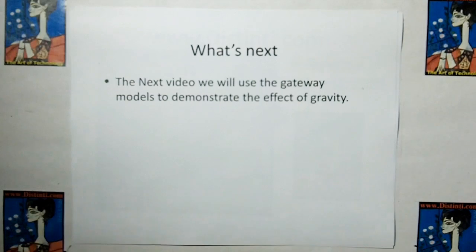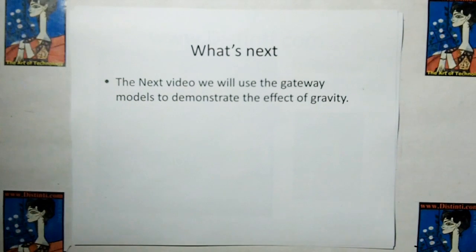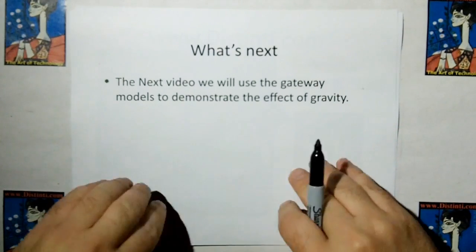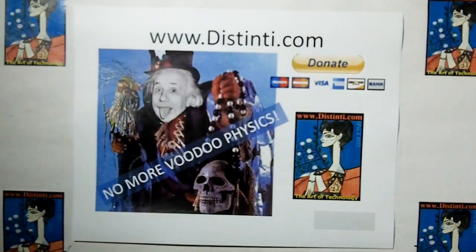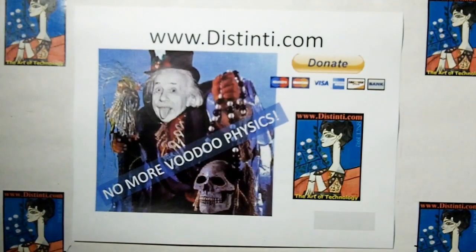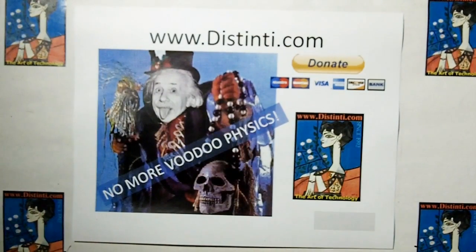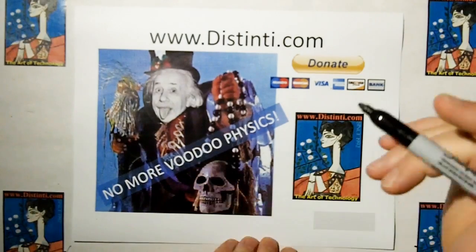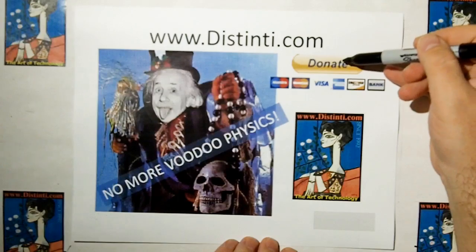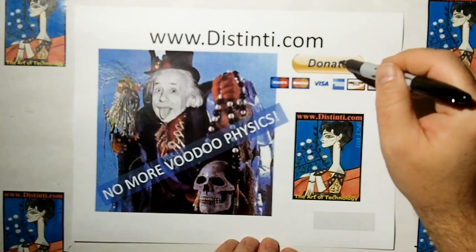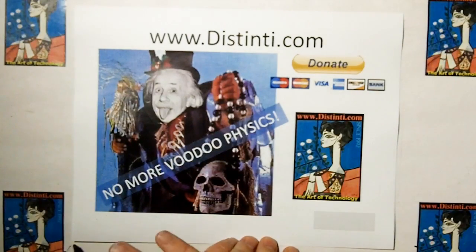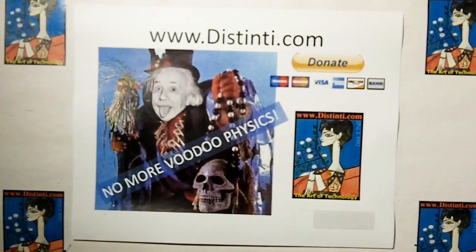So what's next? Next, we're going to use the gateway models to demonstrate the effects of gravity, how gravity actually develops a force to pull a body toward a mass that's consuming ether. Thank you. I've been getting some donations. I really appreciate that. If you could subscribe, please get the word out. Donate if you can. Go to my website. There's a donate button. And no more voodoo physics. Thank you.